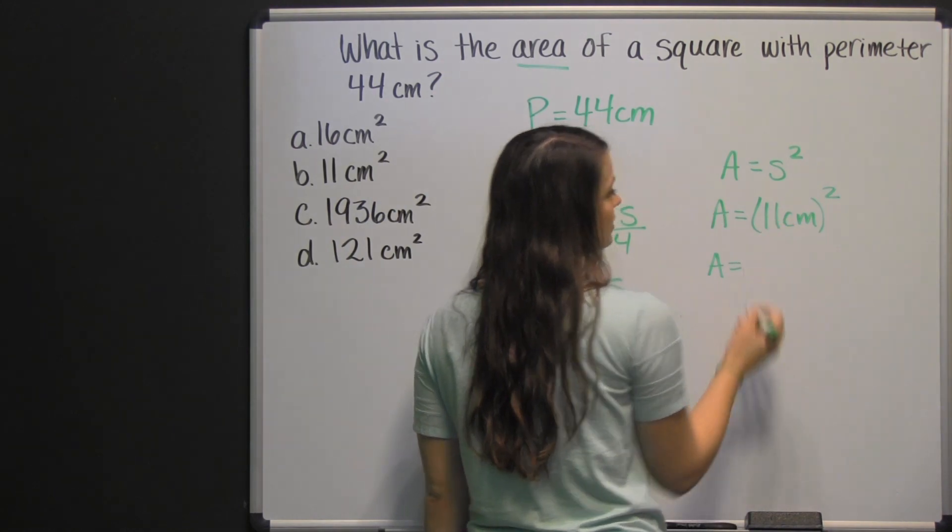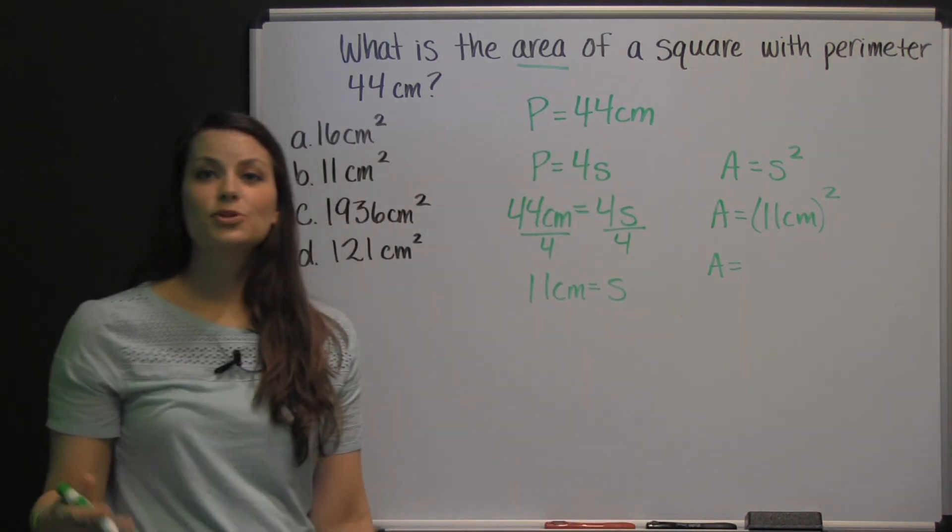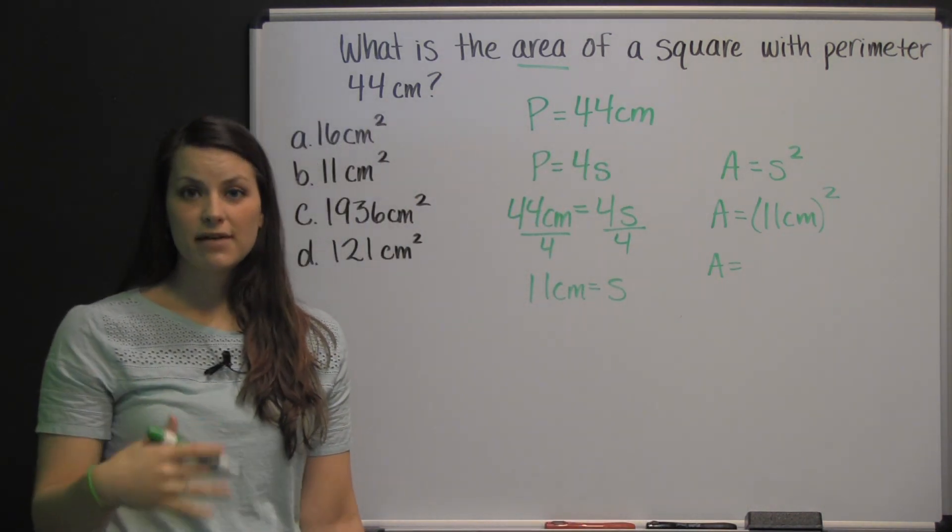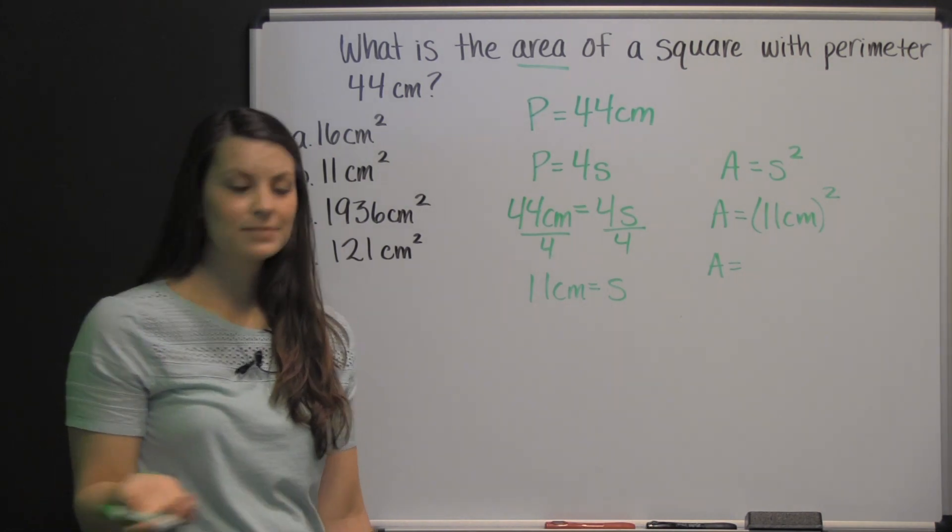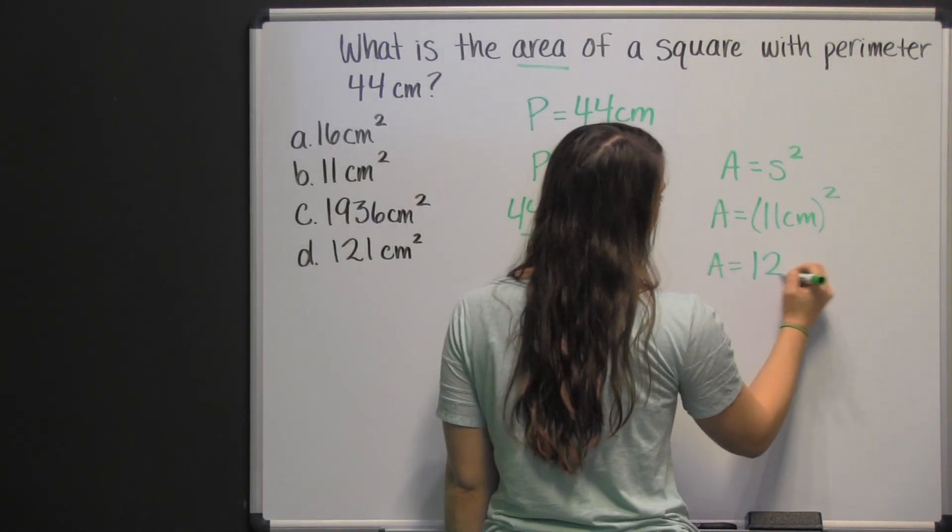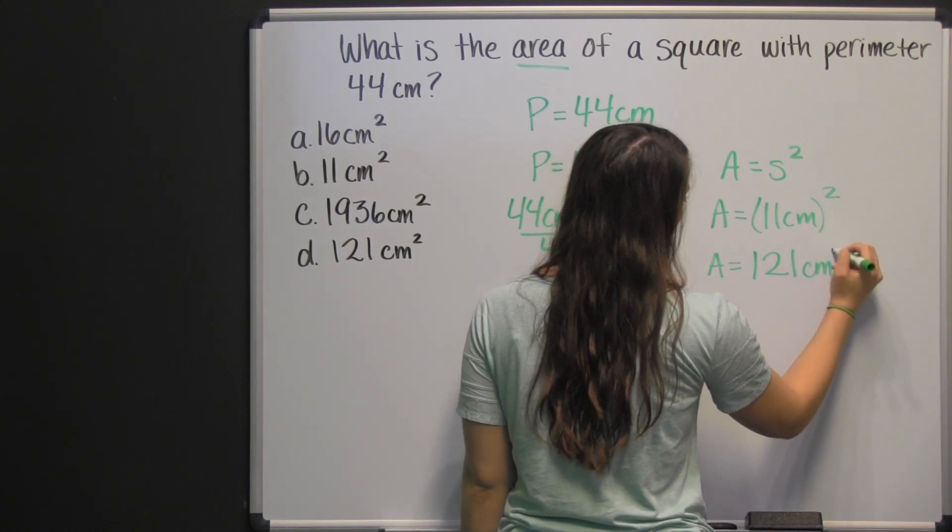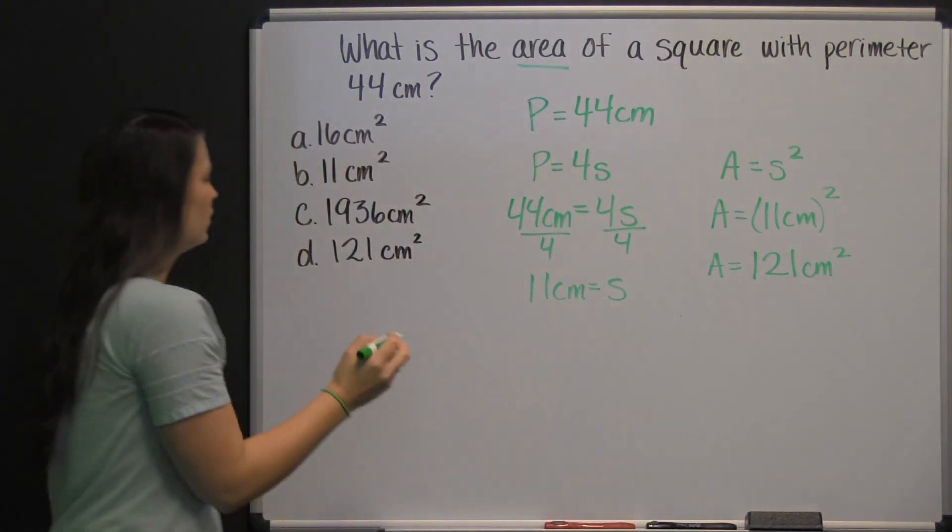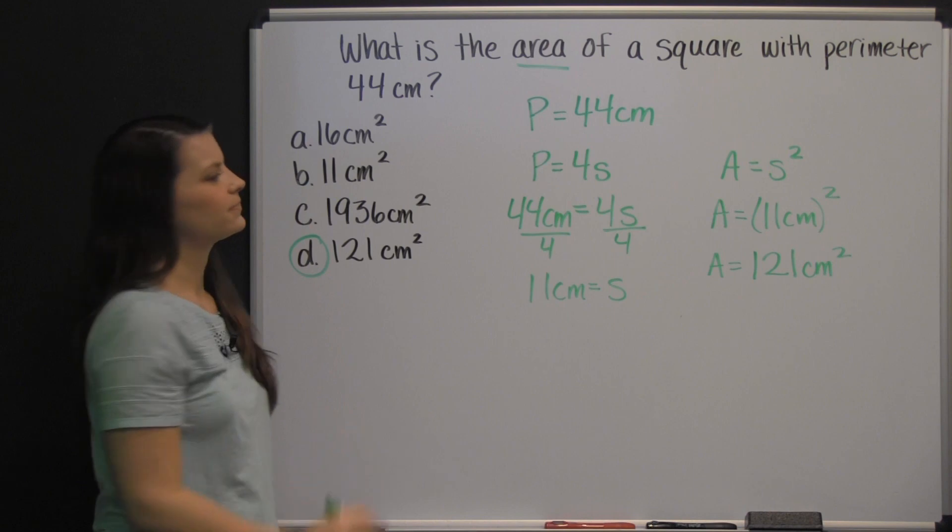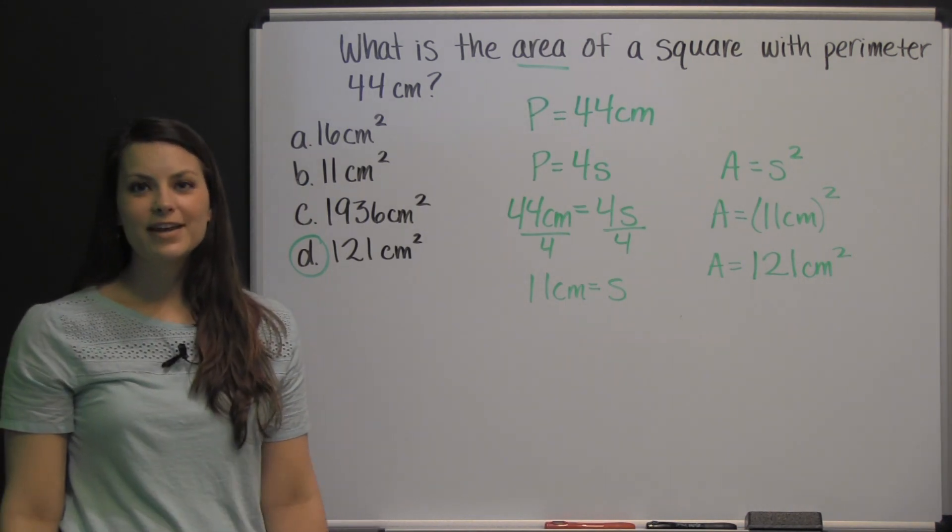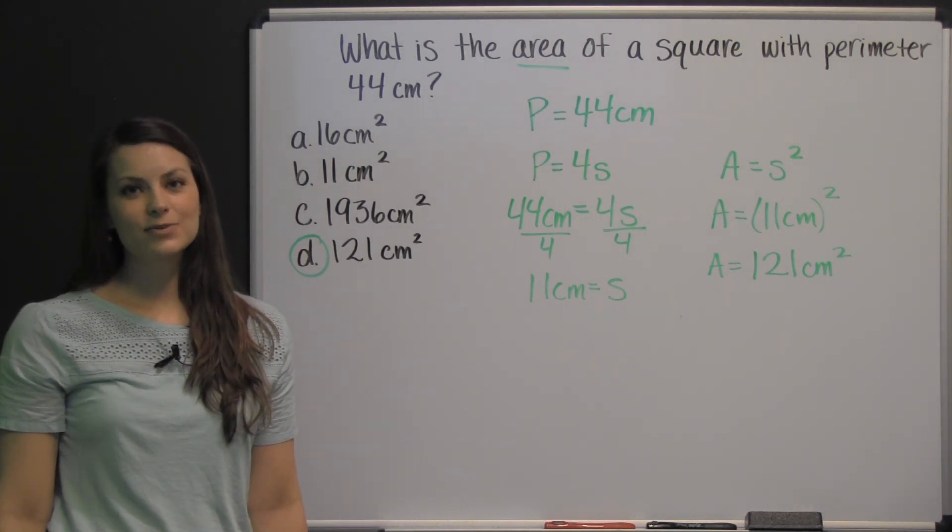Eleven times eleven, that's what 11 centimeters squared means. It means eleven times itself, two times. Eleven times eleven is 121 centimeters squared, or D. There you have an HSPT practice question.